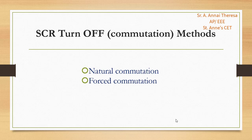In this session, we will study about the turnoff methods or commutation methods of SCR. In the previous video, we studied about the triggering methods. A thyristor can be turned on by triggering the gate terminal with a low voltage short duration pulse. But after turning on, it will conduct continuously until the SCR is reverse biased or the load current becomes zero.